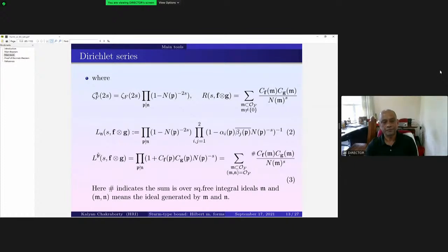And the second one is L_v(s, f×g). So again for p not dividing that starting ideal: (1 + cf(p)cg(p) N(p)^(-s)). So here this hash sign indicates that the sum is over all square-free integral ideals m. If you write it in a series form, then it is cf(m)cg(m) by nm to the power s, but this sum is over the square-free integral ideals m that is of our interest, and m and n are coprime.